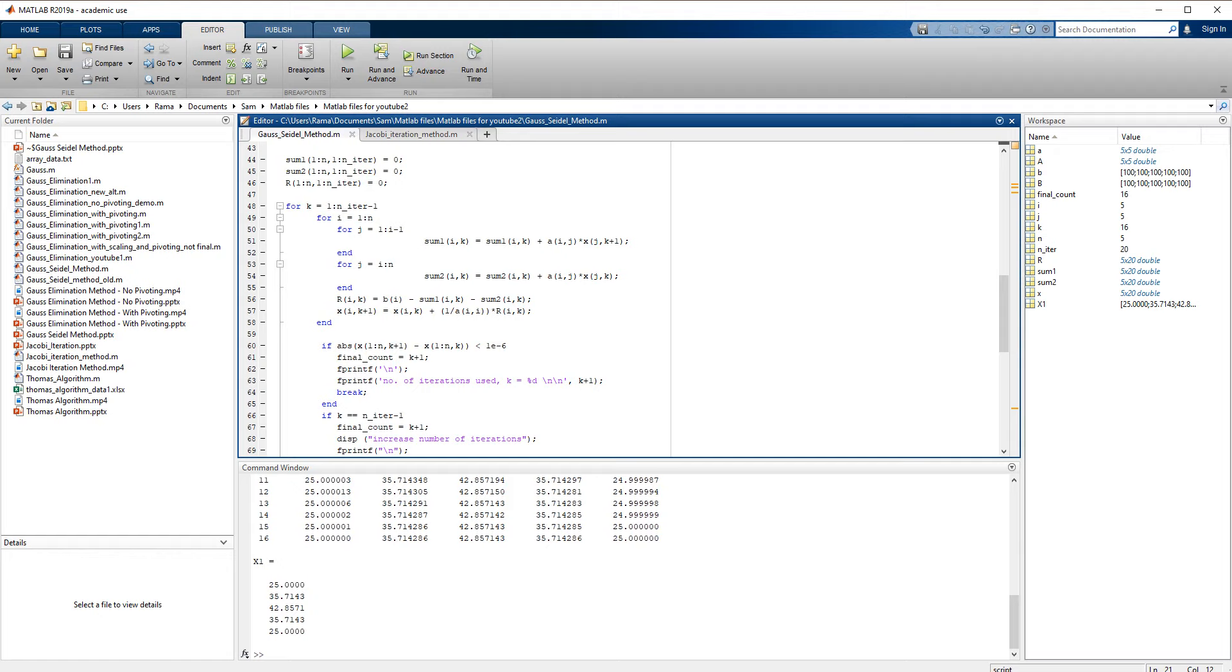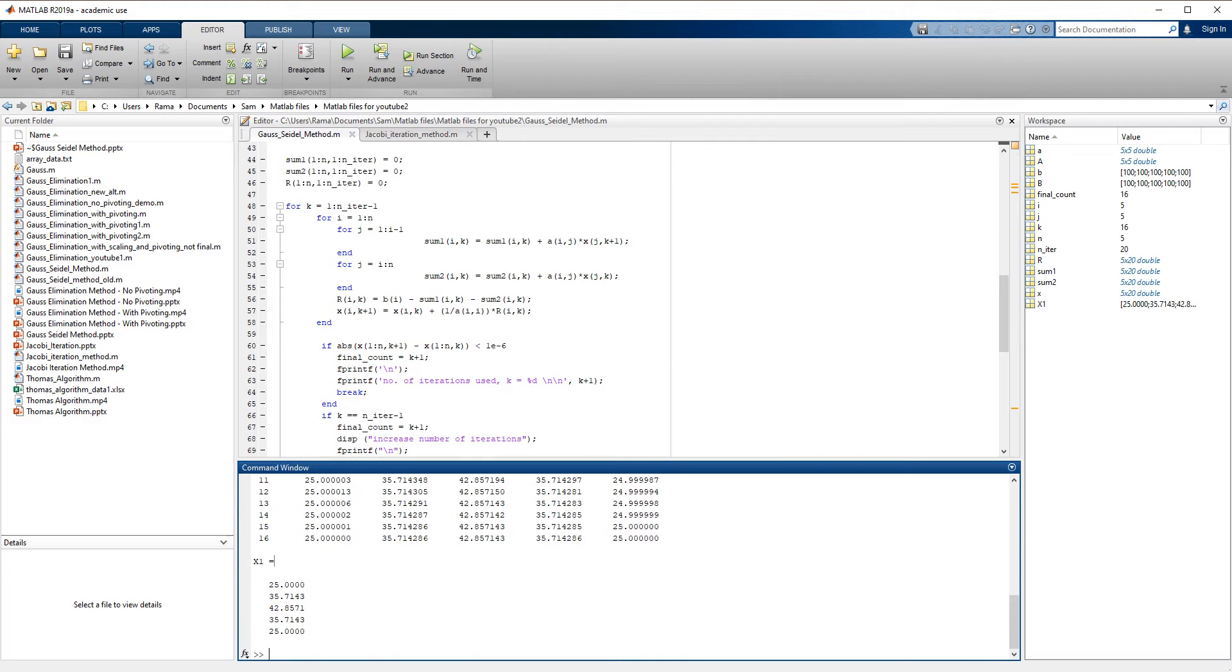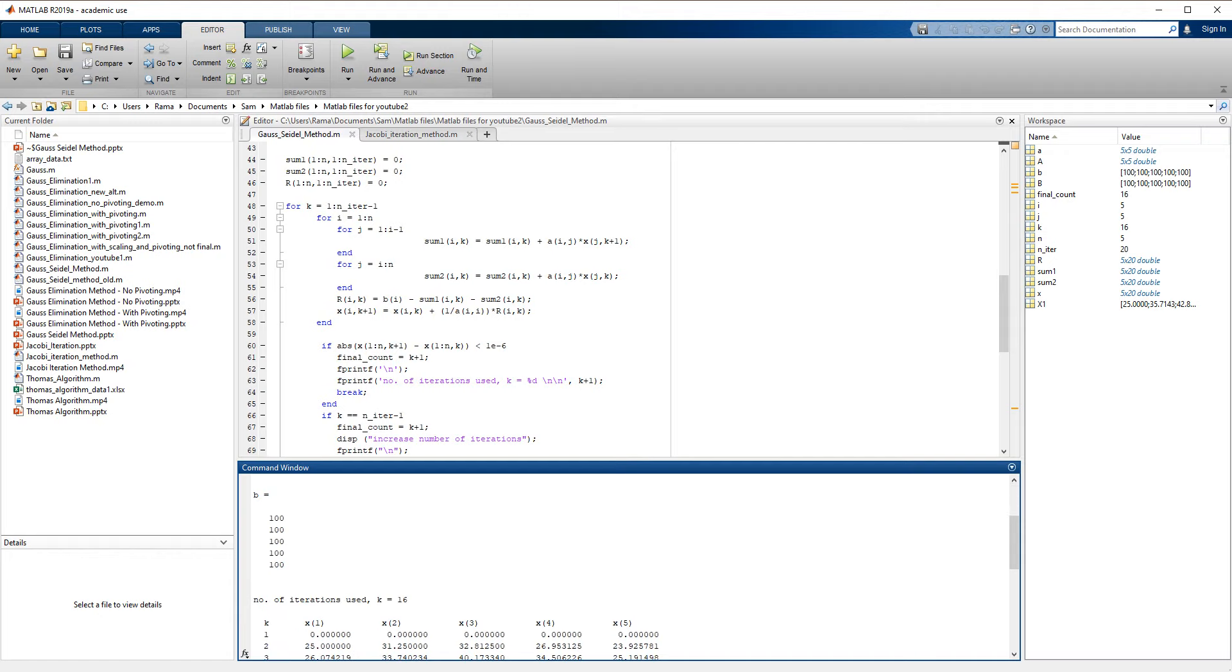When we run this program using Gauss-Seidel method, again this A matrix is given here and B vector is given here.